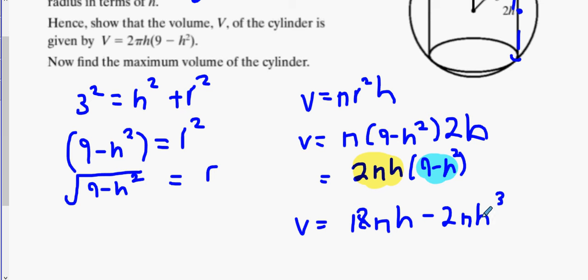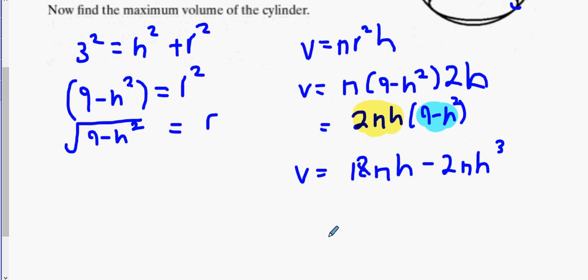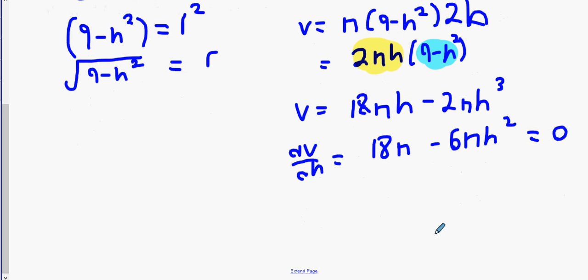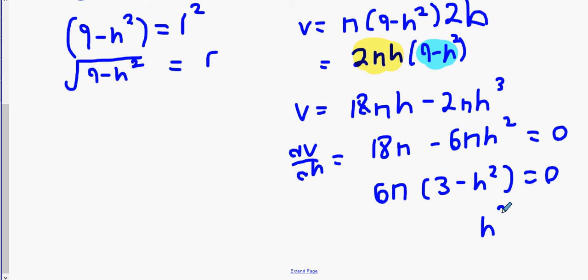We're going to have to prove it's a maximum, so we do the second derivative as well. dV/dh equals 18 pi minus 6 pi h squared, and that equals zero. Factorize out 6 pi, and you're left with 3 minus h squared equals zero. This implies h squared equals 3. Can it be minus root 3? No, so there's only one answer: h equals positive root 3.